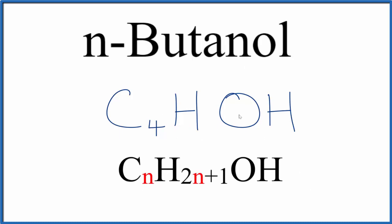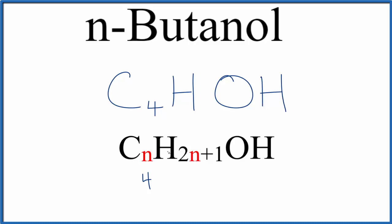So this formula works for simple alcohols like n-butanol. We know we have four carbons, and then hydrogen, we have two times n, that's the four, plus one. Then we have O-H on the end. So two times four is eight, plus one. C4H9OH, that's the formula for n-butanol.